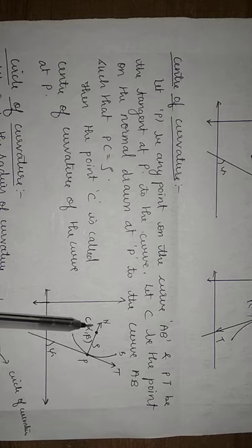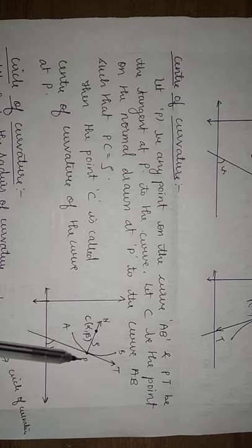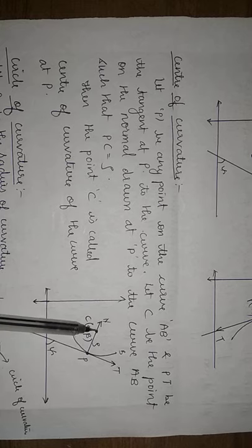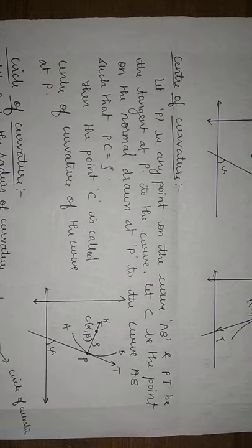So from point P, whatever distance is taken as the radius of curvature, the endpoint is known as the center of curvature. The center of curvature is given by the coordinates alpha comma beta.